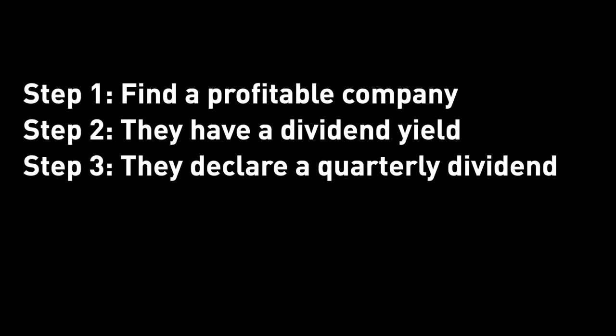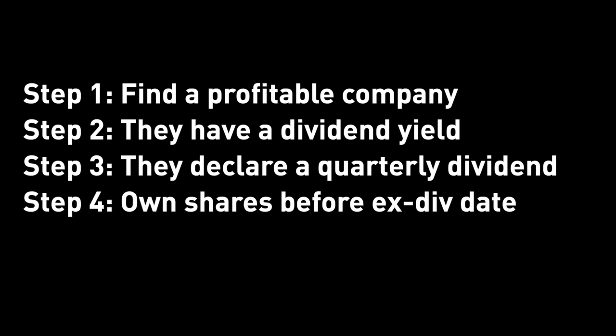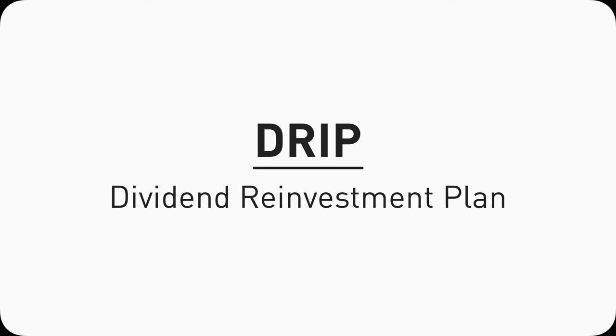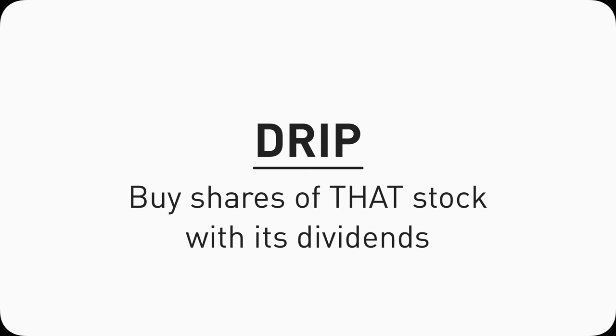Make sure you own a share of that company before the ex-dividend date, whether you buy a day before or already owned one long ago. Then on the payout day — using the same example, Apple Q3 2021 — on November 11th, 2021, their payable day, if you own a share of Apple, you will see your dividends deposited into your brokerage account cash balance. If you have DRIP enabled, which stands for dividend reinvestment plan, your brokerage firm will automatically use that dividend money to buy more shares of that stock.